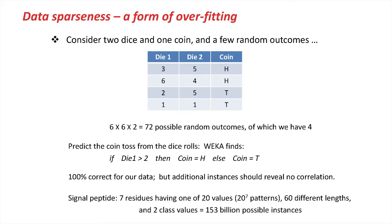So I give these four instances to WEKA. I say, come up with a rule that allows me to predict the coin toss from the roll of the dice, and it comes up with a model. If die number one is greater than two, then the outcome of the coin toss is heads. Otherwise, it's tails. And that fits the data we've got here 100% correct. But of course, if we had additional instances, then hopefully WEKA would see that there's no correlation. These are random outcomes.